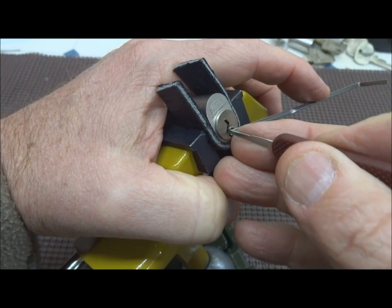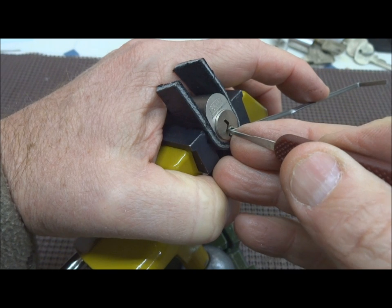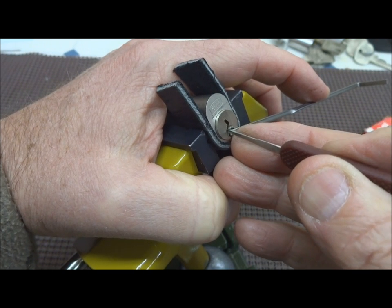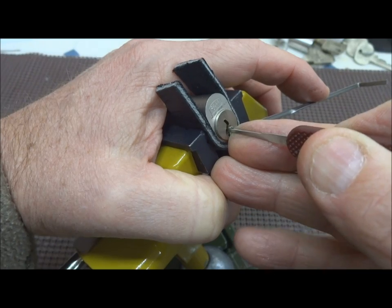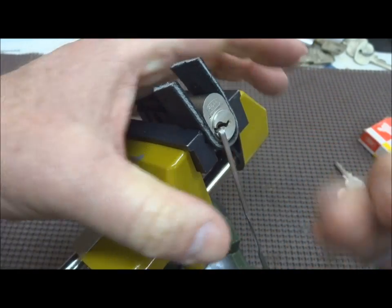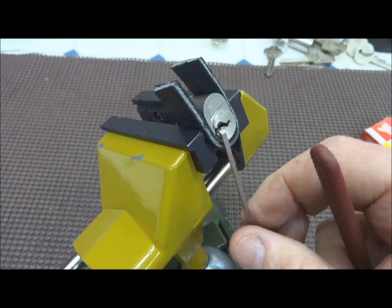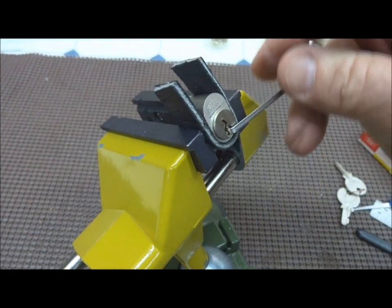All right, so we're in now. Okay, a little bit of tension and just start working our way out. Pin three. This is Zeiss, so you've got to be very careful. There don't appear to be any security pins. There we go—no security pins in this thing.